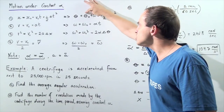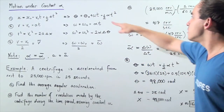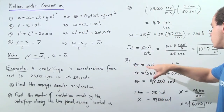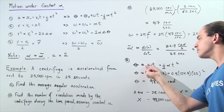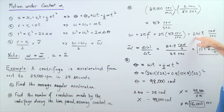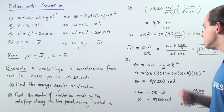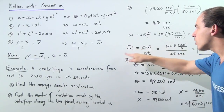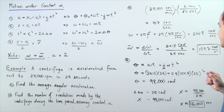Our initial angle measure is zero, so that term goes to zero. We know our angular velocity is 2618 radians per second, the time is 25 seconds, and the average angular acceleration is 104.7 radians per second squared.